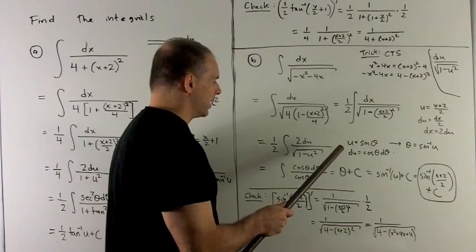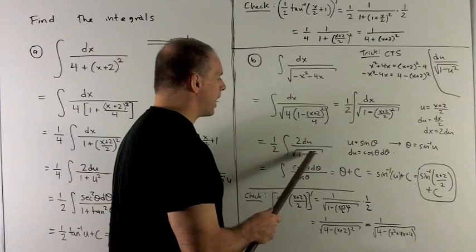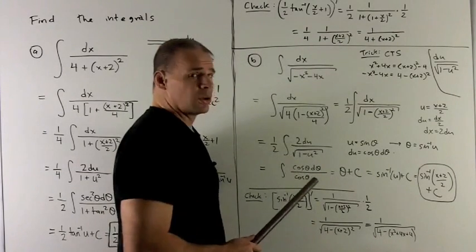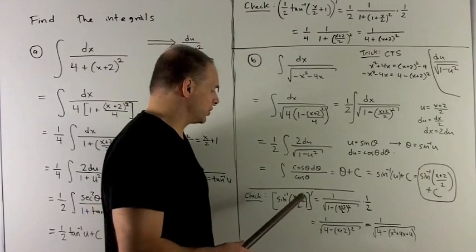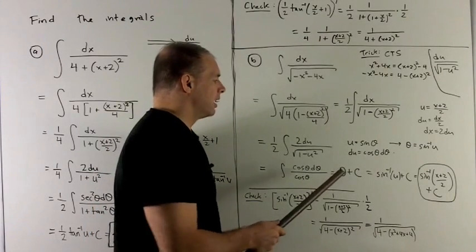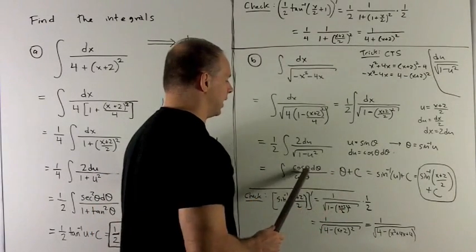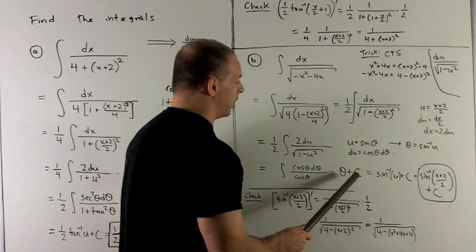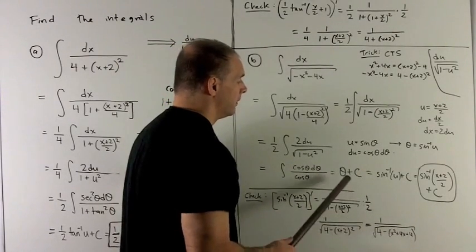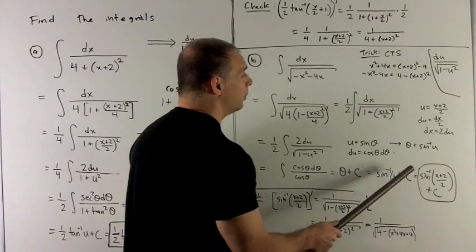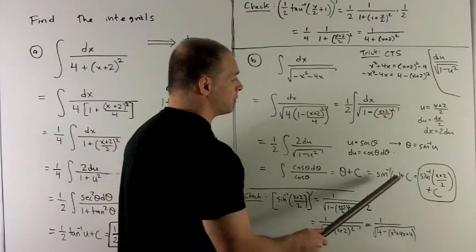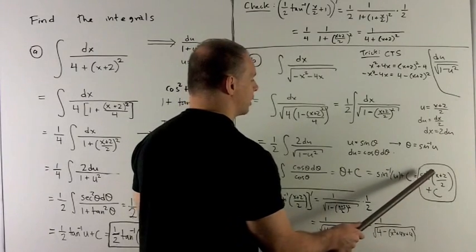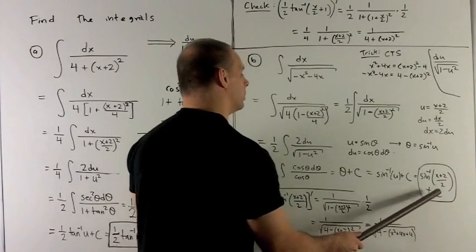We put things in. So I have 1 minus u squared, that's 1 minus sine squared, square root cosine squared, square root turns into cosine theta. And then du is just cosine theta d theta. Again, everything collapses nicely, and we're just left with theta plus a constant. Theta is equal to sine inverse of u. And now I just punch out the u, which is x plus 2 over 2. So I have sine inverse of x plus 2 over 2 plus a constant.